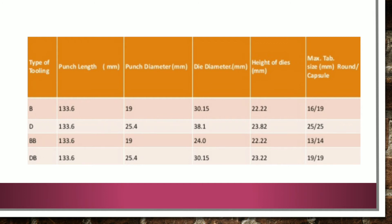For D tooling, punch length is 133.6 mm, punch diameter is 25.4 mm, die diameter is 38.1 mm, height of die is 23.82 mm, and maximum tablet size is 25 mm for both round and capsule. For BB tooling, punch length is 133.6 mm, punch diameter is 19 mm, die diameter is 24 mm, height of die is 22.2 mm, and tablet size of 13 mm round or 14 mm capsule. For DB tooling, punch length is 133.6 mm, punch diameter is 25.4 mm, die diameter is 30.15 mm, height of die is 23.22 mm, and maximum tablet size is 19 mm for both round and capsule shaped tablets.